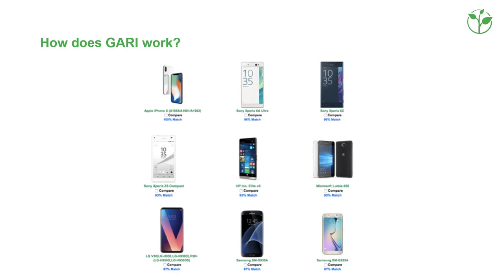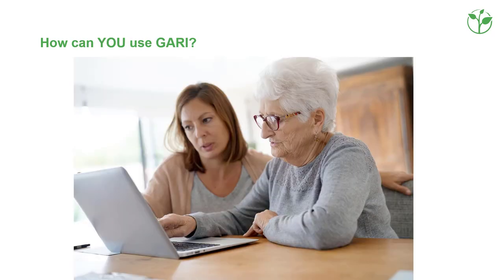The database then gives you a list of devices that have the features you are looking for. Different stakeholders use GARI in different ways. For consumers, it is a comprehensive, searchable database of phones and features in multiple languages. Users with specific needs, family members, informal and formal carers, and occupational therapists can use the database to find suitable devices.